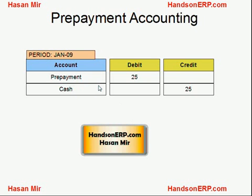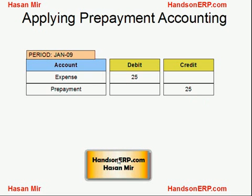When you pay somebody as a prepayment for an item you'll receive later, your prepayment account is debited — meaning $25 sits in your prepayment account, which is an asset type — and your cash is reduced by $25. So one asset is being converted into another type of asset. Your cash is reduced, but you still own that $25 as something of value because you have not received the item yet; you still have a receipt showing that you made this prepayment to somebody, and that receipt is of value — it's an asset.